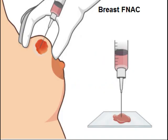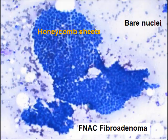The overlying skin of the breast appeared normal. No axillary lymphadenopathy was present. She was advised for FNAC — fine needle aspiration biopsy. A syringe is used to take samples, and smears are examined under the microscope. They showed honeycomb sheets, or monolayer sheets of epithelial cells, and bare nuclei in the background.